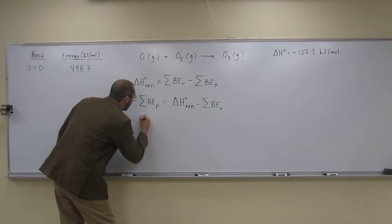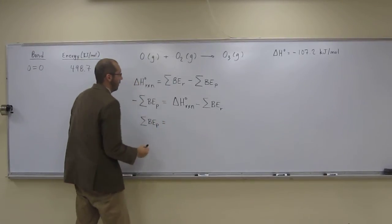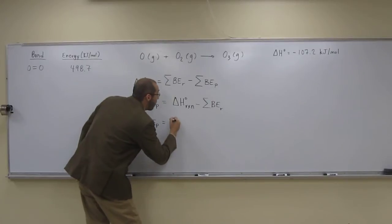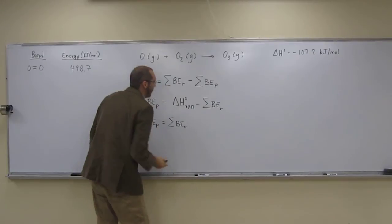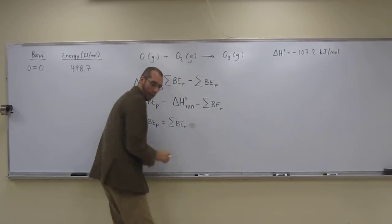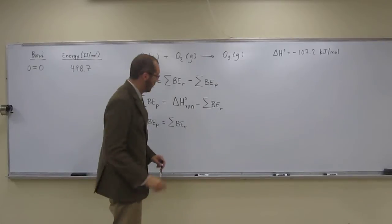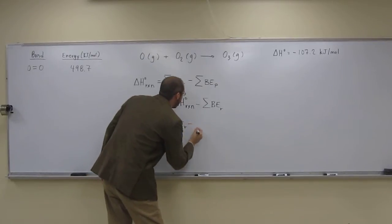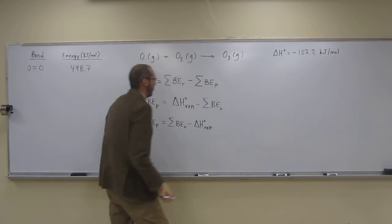So when we multiply by negative one, we're going to get the sum of the bond energy of the products equals the sum of the bond energy of the reactants minus the delta H of the reaction.